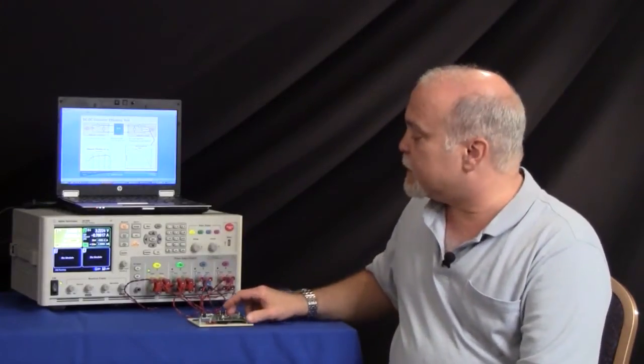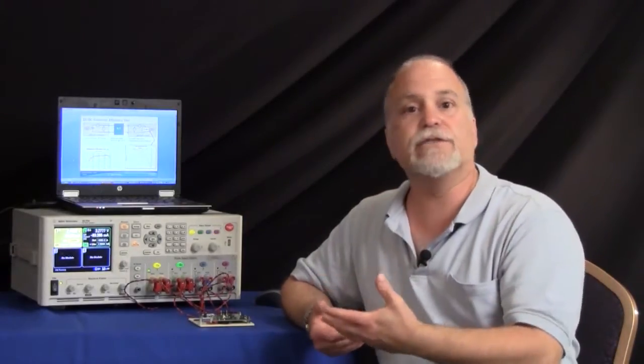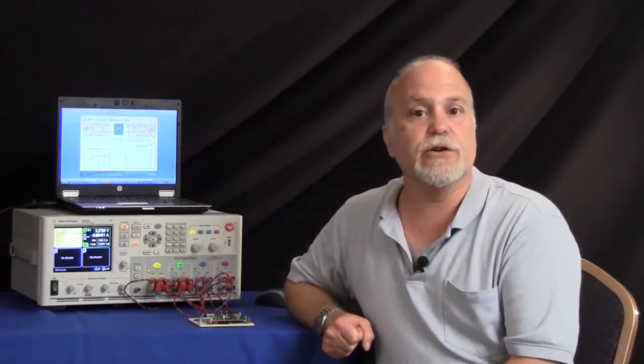What I have in front of me here is a demo board that has a DC to DC converter in the center, and the measurement we're going to make on this DC to DC converter is an efficiency measurement, which is very important because an efficient DC to DC converter means that the device that it's inside of, like a handset or some kind of wireless device, will have a longer run time off of its battery.